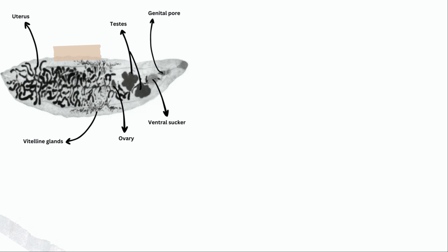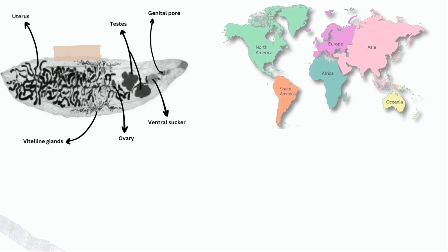Dicrocoelium dendriticum, commonly known as the Lancet Liver Fluke, is a fascinating parasite with a complex life cycle involving multiple hosts. It is found in almost all parts of the world, including Europe, Asia, Africa and America. Dicrocoelium dendriticum resides in the small bile ducts and gallbladder and is globally distributed.